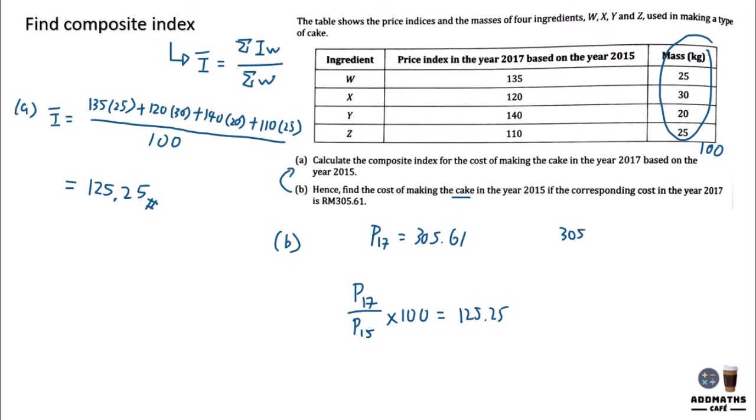We have 17 but we are finding 15. So what we do is bring all unrelated variables to the opposite side, which is 305.61 over P15 equals 1.2525. Because this divides through, price of 15 will be equal to 305.61 divided by 1.2525, and this will give you an answer of RM244.